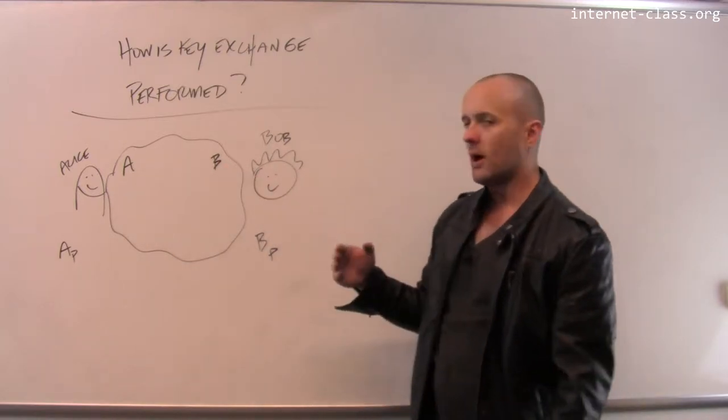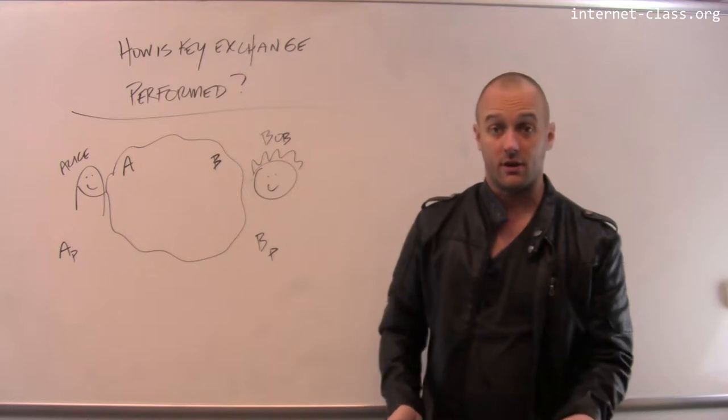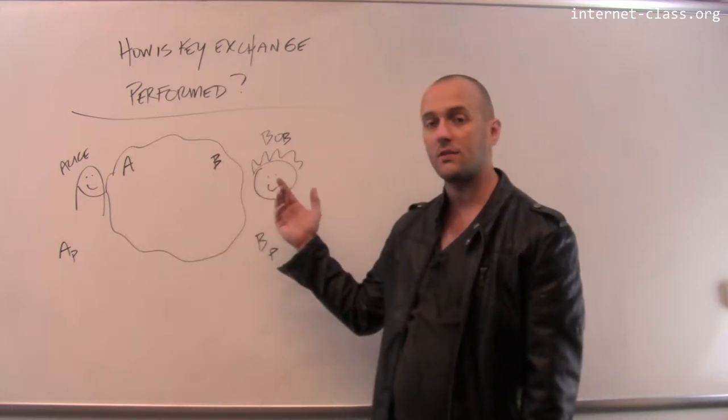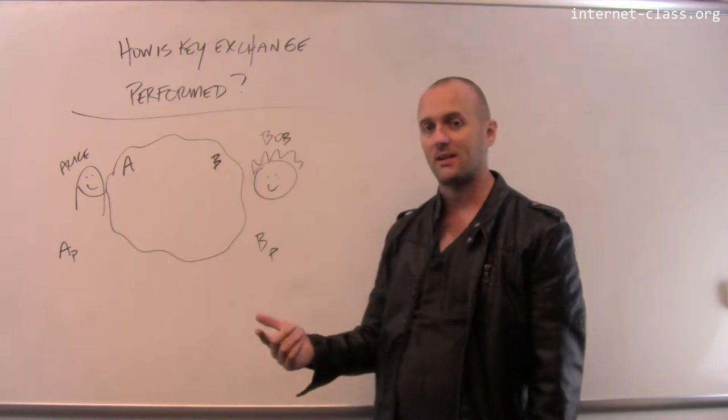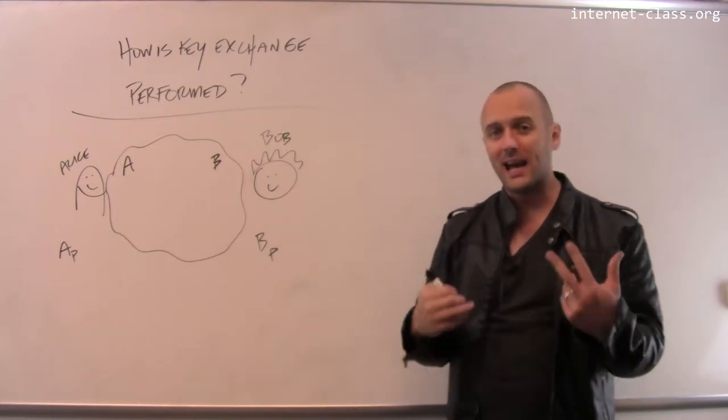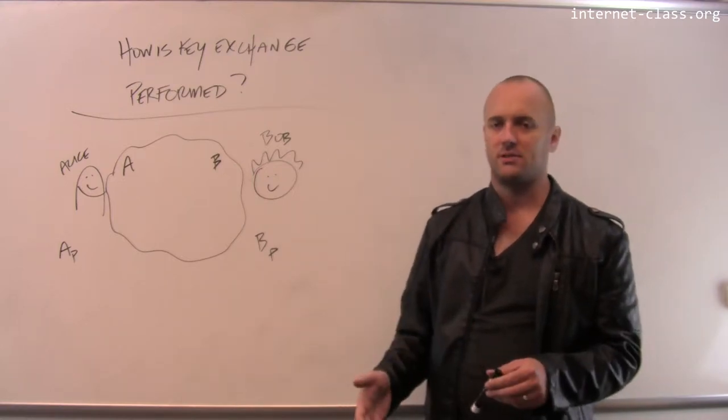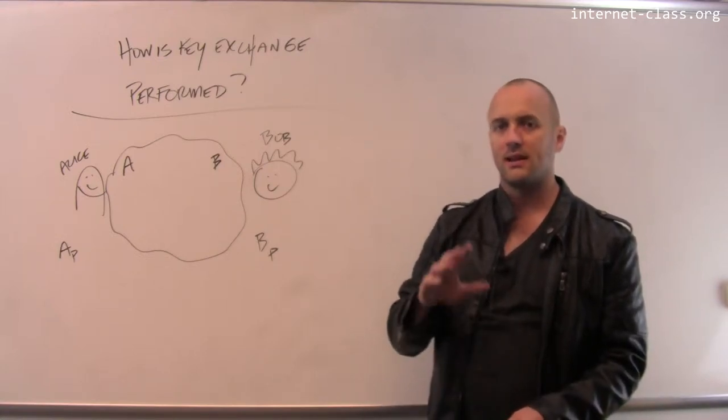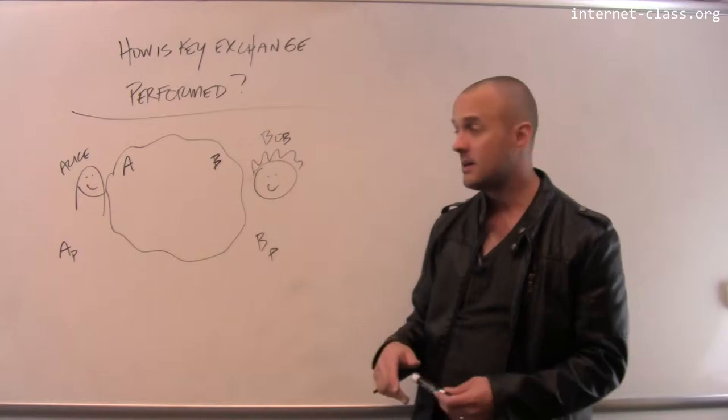So let's say that Alice and Bob want to have a conversation. They want to do it securely. So again, they could use each other's public keys to encrypt all the messages that they send back and forth. But it's fairly computationally intensive to decrypt those messages, and so there's a fair amount of load that goes into this. So let's not do it that way.